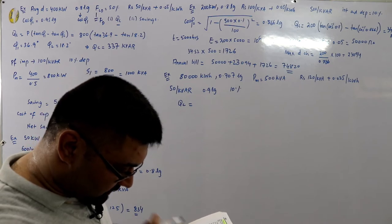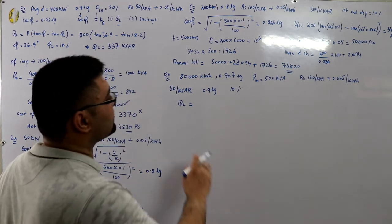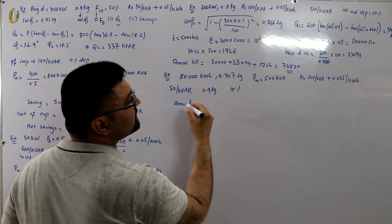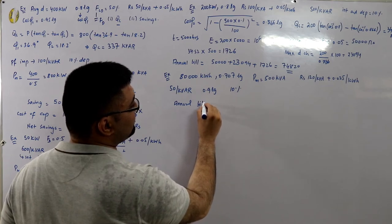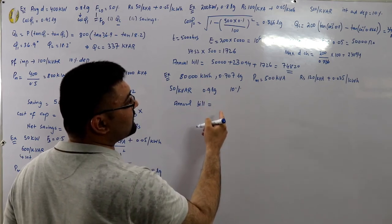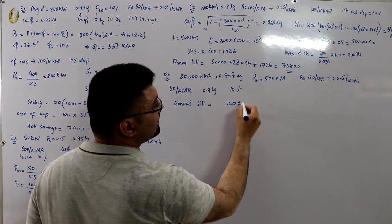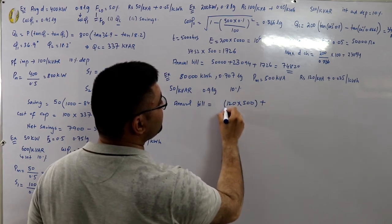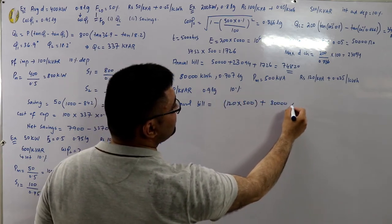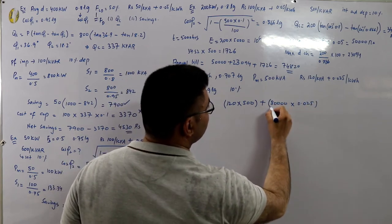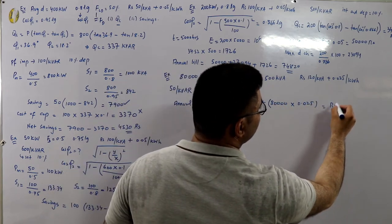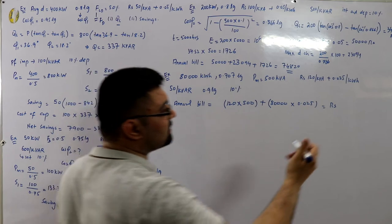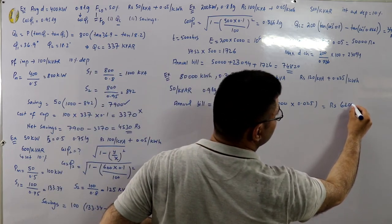Calculate the annual cost of supply before power factor correction. Annual bill = fixed cost + variable cost = (120 × 500) + (80,000 × 0.025) = 60,000 + 2,000 = approximately 62,000 rupees.